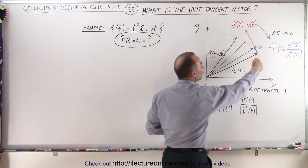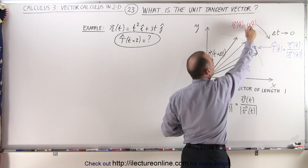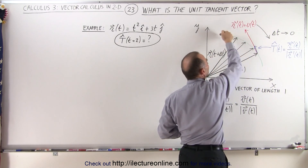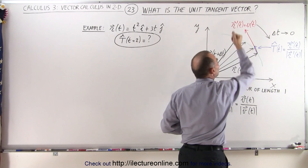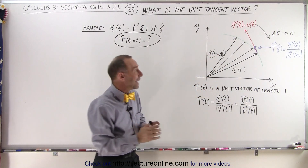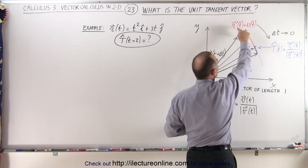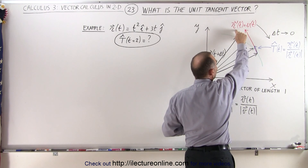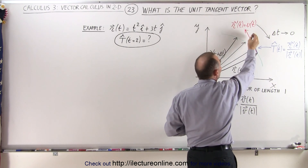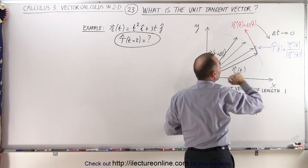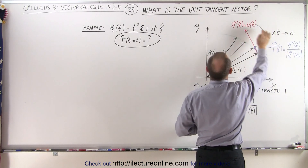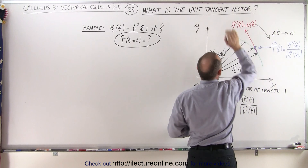Here you can see that the red vector represents the velocity of that particle as it's moving along this path, which is the derivative of our position vector. Now if we take that velocity — the derivative of our position vector — and divide it by its magnitude, that then defines what we call the unit tangent vector.